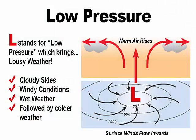Air pressure can tell us what kind of weather to expect. A sudden drop in air pressure usually brings stormy weather — we call this low pressure. Low pressure is usually represented by a red L on weather maps. At the surface, moist air comes together or converges, then rises to create stormy weather.